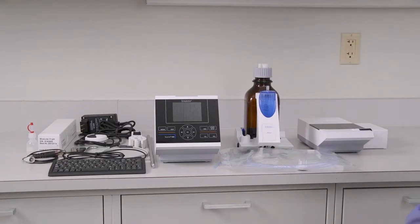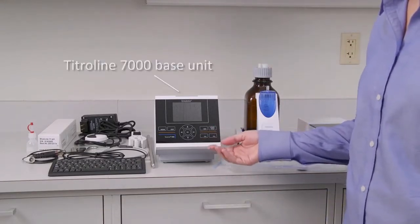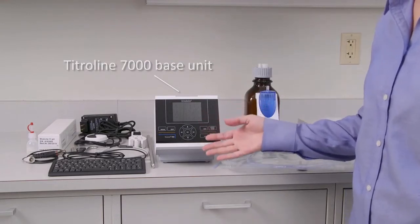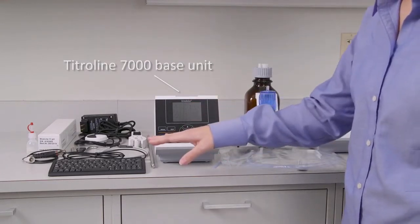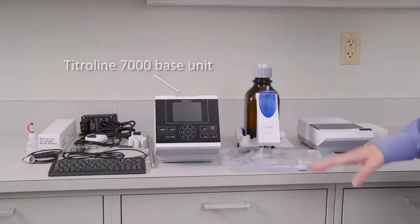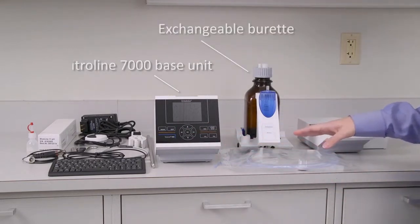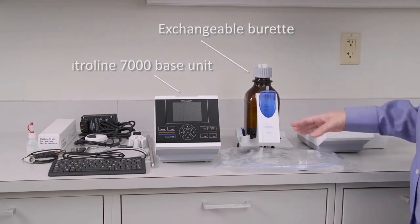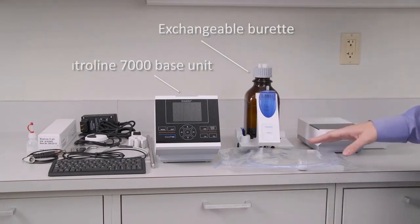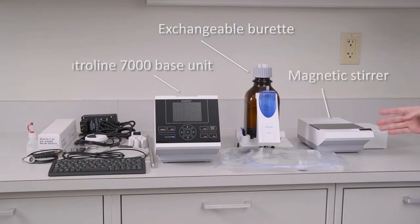We've got three main components of the system. The first one being the Titreline 7000 base unit - this is essentially the brain of the system, and all of the accessories that you see here will come along with that. The next part is the exchangeable burette, this is the slide on, slide off modular burette option that we offer, and all the tubing comes along with that. The final portion is the magnetic stirrer.